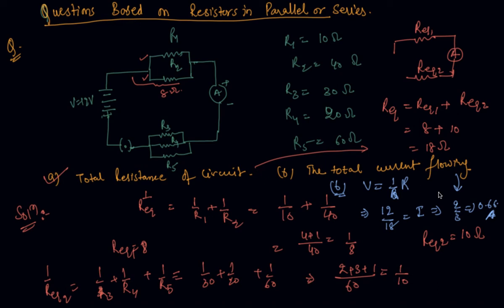So these type of questions students might come into exam where you need to use the formula. Here we have used the formula for parallel resistance 2 times plus 1 times series resistance and then we find out the value of total current flowing through the circuit.